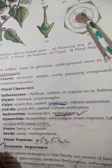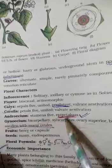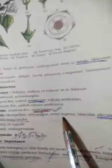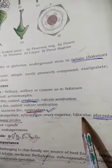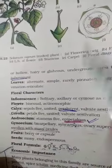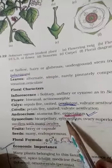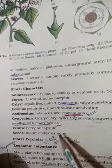Gynoecium is bicarpellary, two carpels are there. Syncarpous, they are united. Ovary is superior, hypogynous flower. Bilocular, two chambers are there. Placentation is axile. You can see here in the center, the axile placentation. This is a very important characteristic of this class.